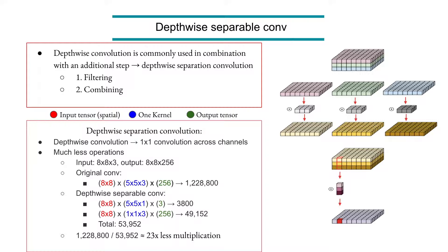Let's analyze some computation numbers. Depth-wise convolution has fewer operations. Assume you have an input tensor of a given size and want a specific output size. In standard convolution, you convolve a 5×5×3 kernel over the spatial dimension with 256 output channels, resulting in around one million computations.